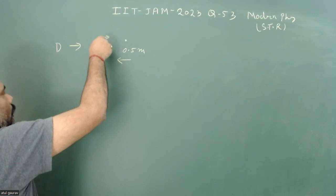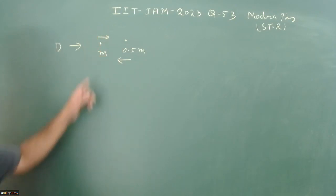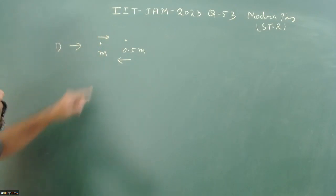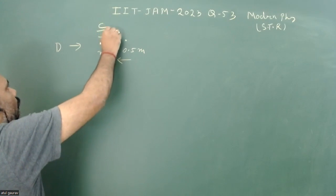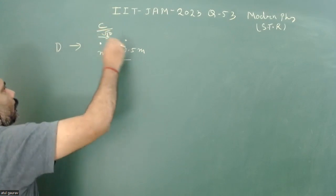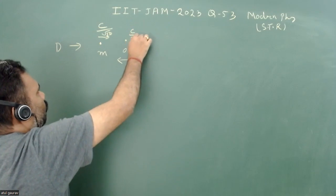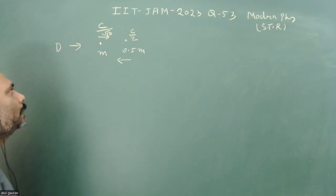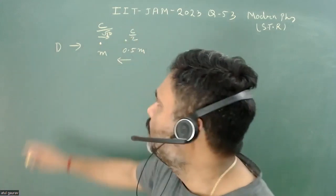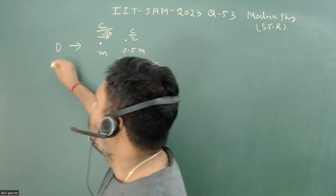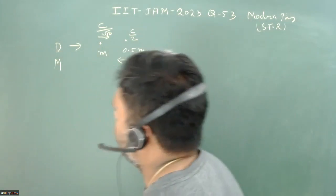The particle whose rest mass is m is moving with the speed c over root 13, and the other particle with rest mass 0.5m is moving with the speed c over 2. What we have to do is calculate the rest mass of the detector. So let us assume the rest mass of the detector is M.